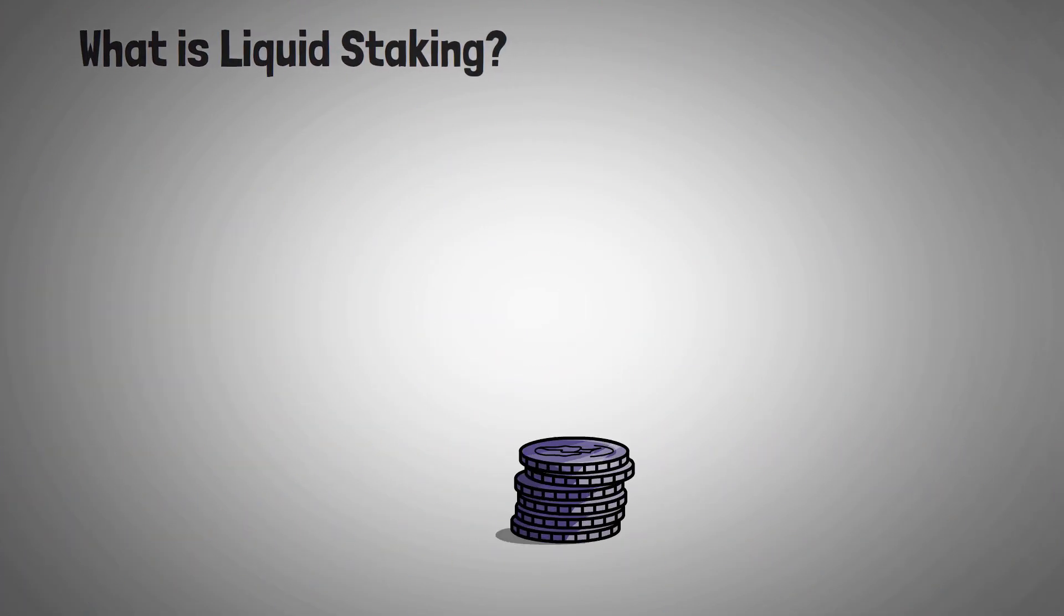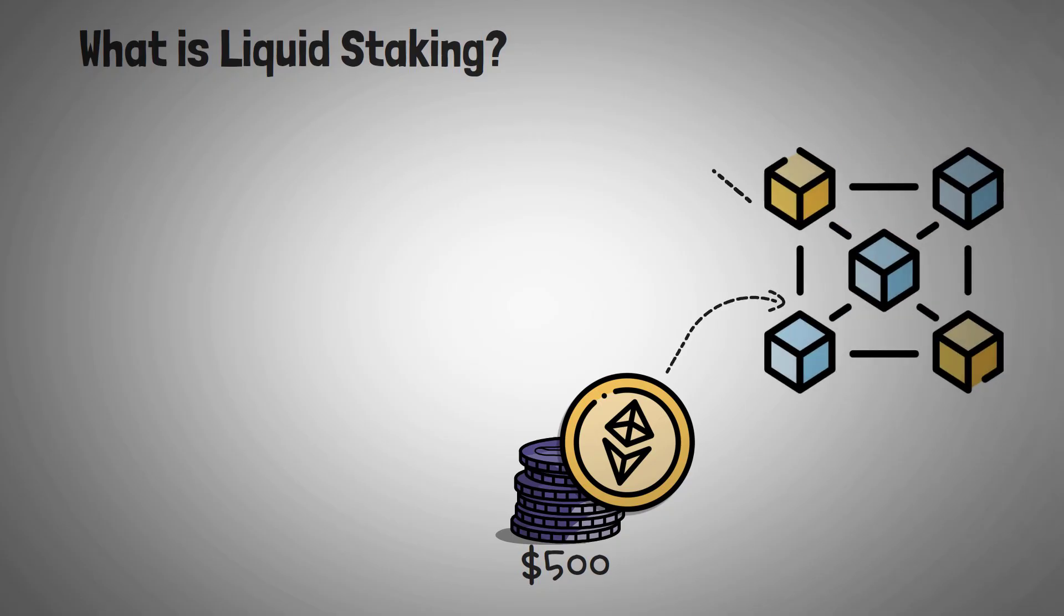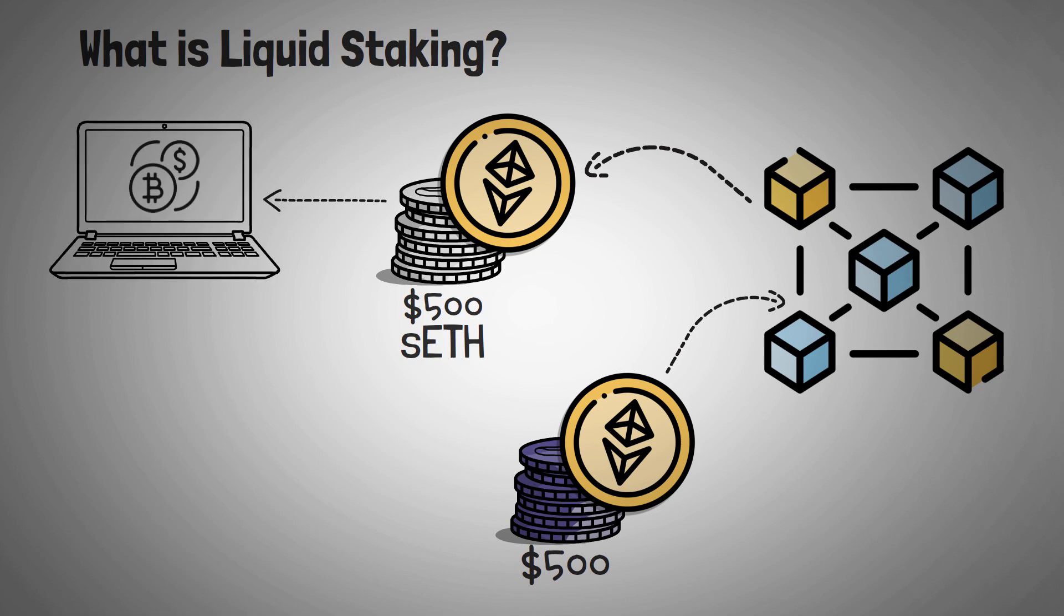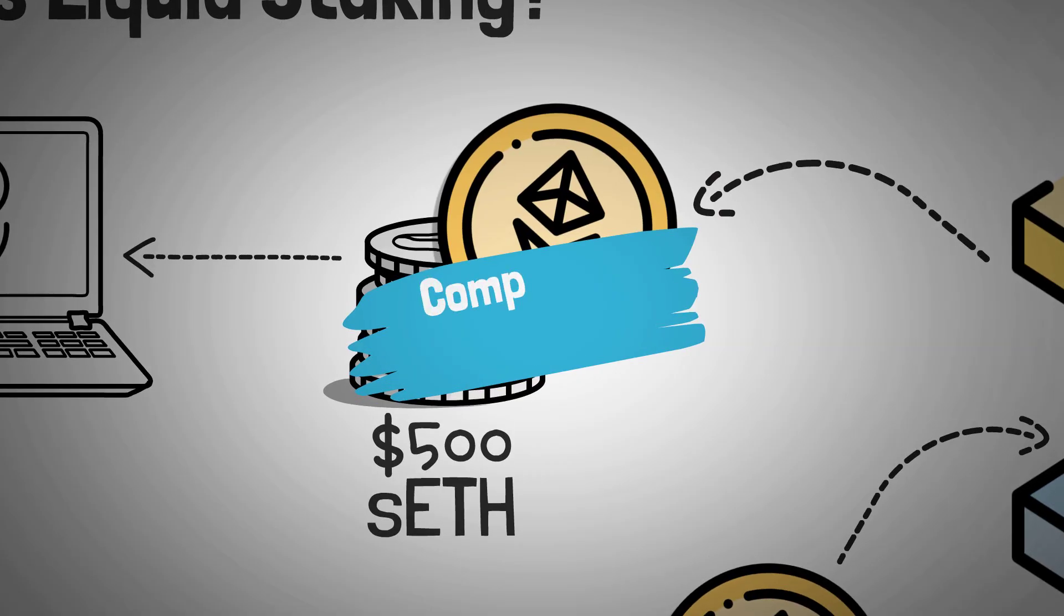So let's give a more practical example. Say you stake $500 worth of Ethereum, or ETH. The liquid staking platform then issues you $500 worth of the staking token. Let's call it SEETH. So now you've given the platform $500, and they've given you an IOU of $500. The cool thing is that you can sell, trade, or redeem this IOU at any point in time, making it completely liquid.